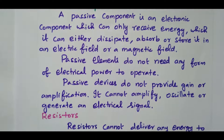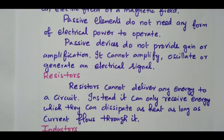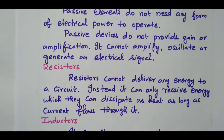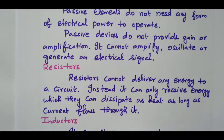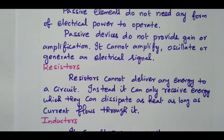We will see the examples one by one. First, the resistor. A resistor cannot deliver any energy to the circuit, but it will receive the energy and dissipate it as heat as long as current is flowing. No power is required to operate the resistor — once the resistor is connected, it will absorb the energy and dissipate it in the form of heat. That is the work done by the resistor.